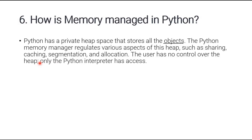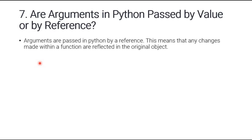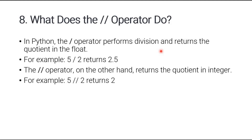Question number seven: are arguments in Python passed by value or by reference? Arguments in Python are passed by reference. This means that any changes made within the function are reflected in the original object.